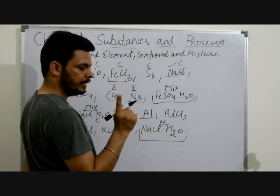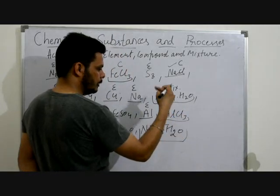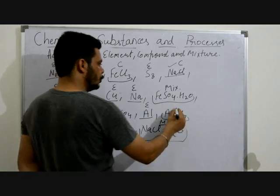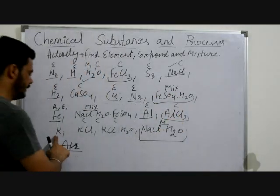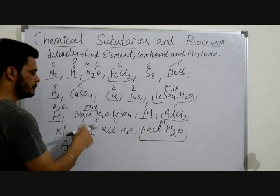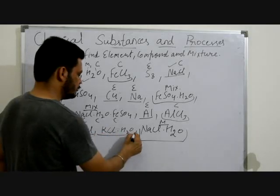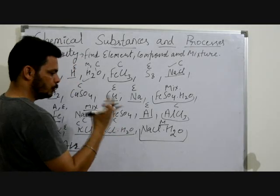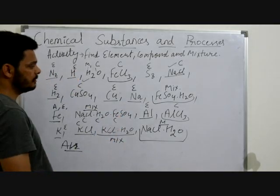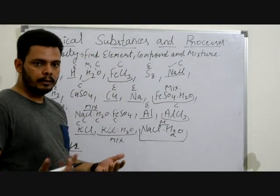Al — aluminium alone — is an element. AlCl3 has two kinds of atoms, Al and Cl, which are different and in a fixed ratio, so it is a compound. ACl and H2O are two compounds mixed together — so that is a mixture. In this way you can find out what is a compound, element or mixture. Do not mix up atoms and molecules — they are a different concept.